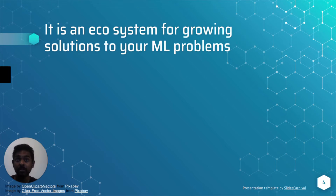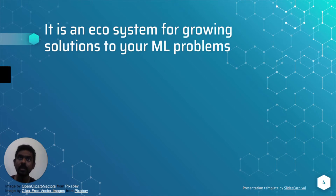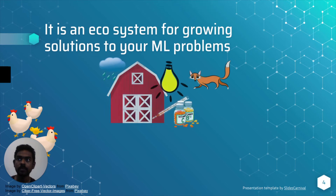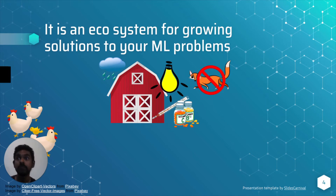To put simply, TensorFlow is an ecosystem for growing solutions for your machine learning problems, particularly deep learning-based solutions. To understand what that means, let's assume you're planning to start a chicken farm. Your end goal is to get the maximum number of eggs. First, you'd buy chicken from a seller, carefully cherry-picking them for quality. Then you'd need to provide the right conditions — protection from weather and from Mr. Fox — and keep them healthy with the correct nutrition to maximize your output.